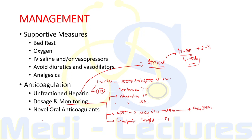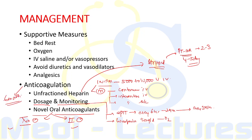Novel oral anticoagulants include oral Factor Xa inhibitors such as rivaroxaban and apixaban, and direct thrombin inhibitors including argatroban and ximelagatran. Anticoagulation should be maintained for at least six months after DVT or pulmonary embolism.